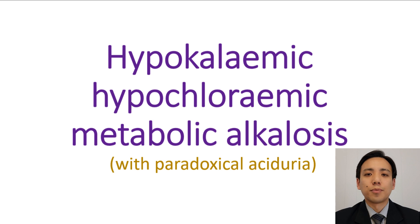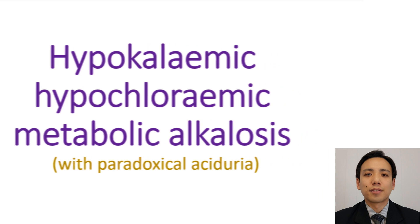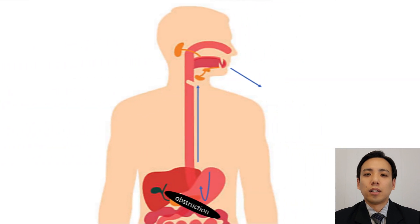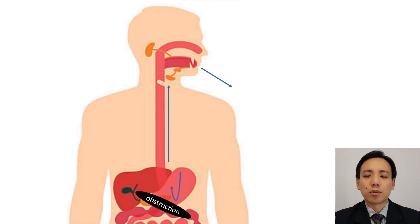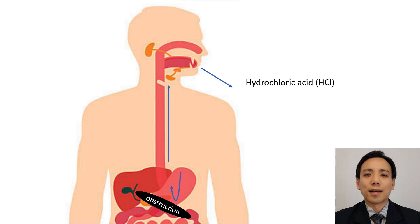The name describes all the biochemical abnormalities of this interesting pathology, which occurs in the following events. Gastric outlet obstruction induces vomiting because the stomach contents can no longer progress forwards, and therefore can only move backwards up the esophagus and out as vomit.